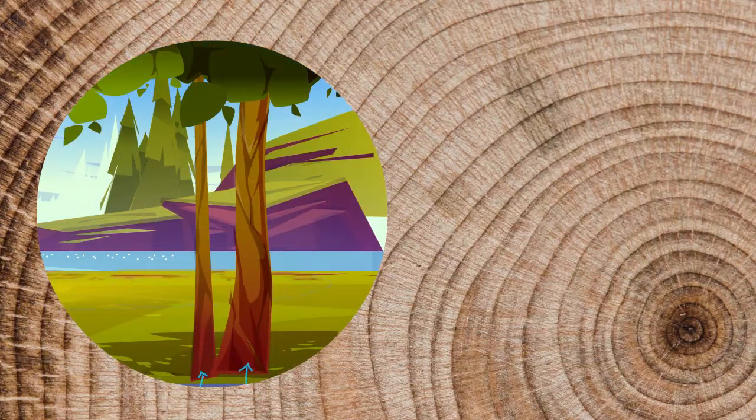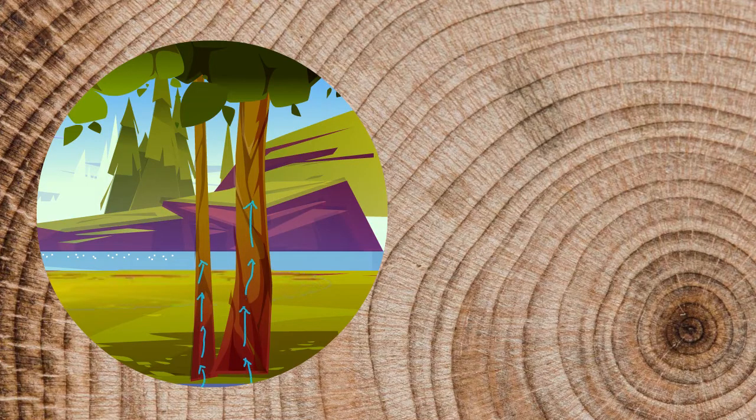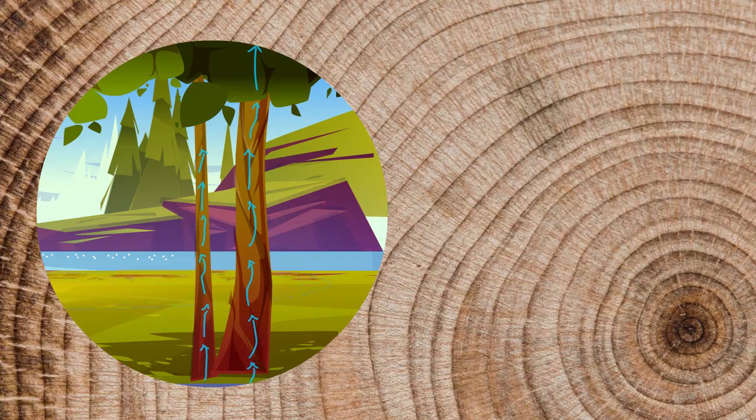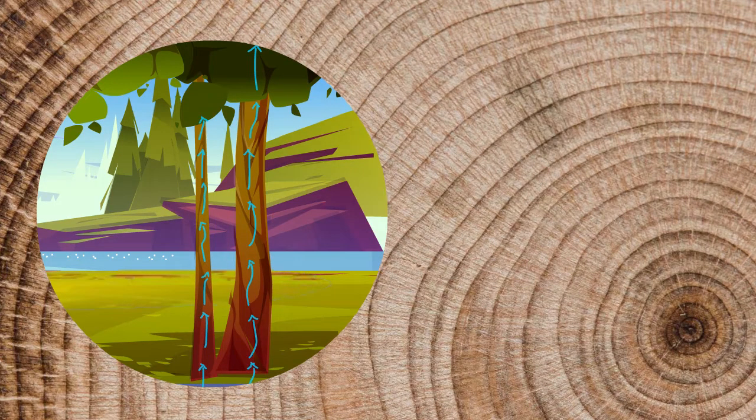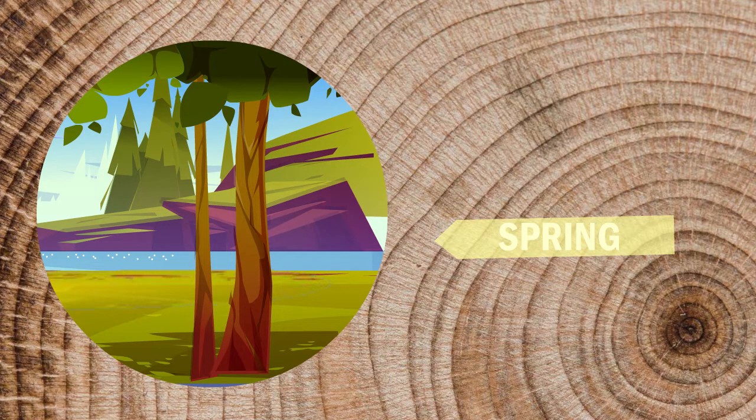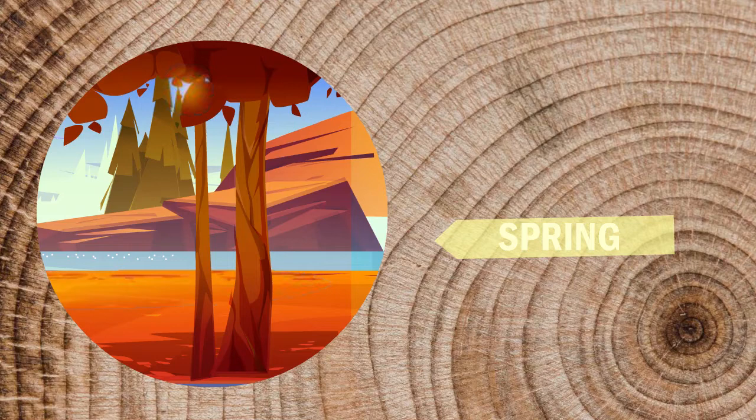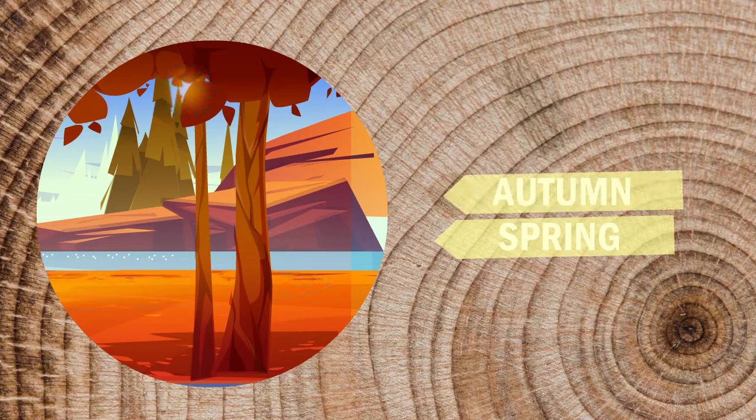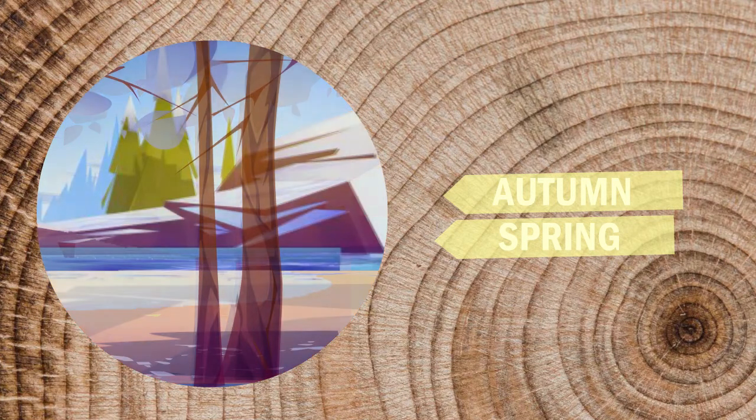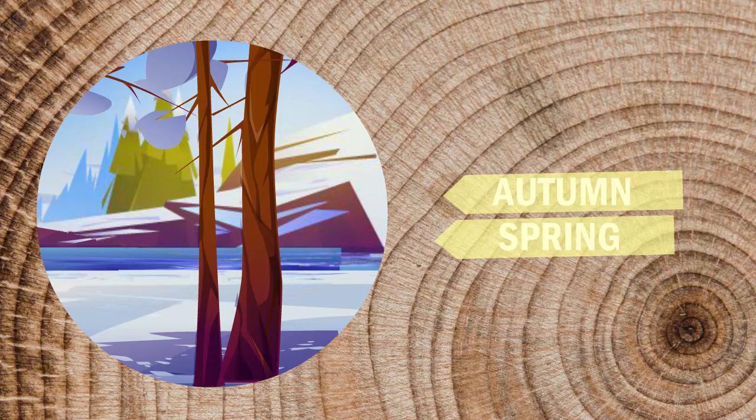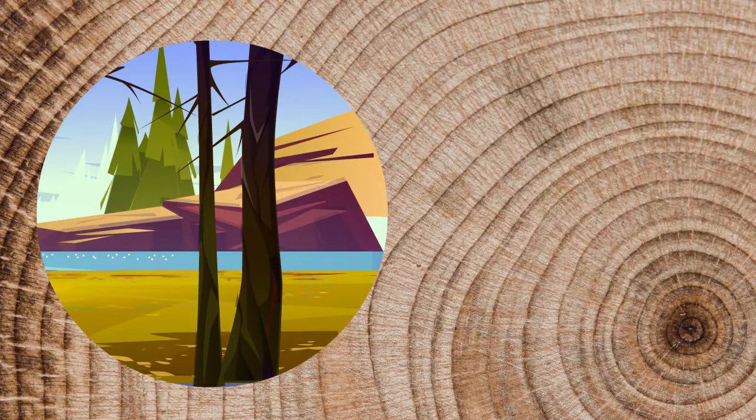In springtime, trees grow by forming new wood composed of large cells capable of transporting all the water and nutrients that trees need to support the new leaves. This wood makes up the light-colored part of the ring. In late summer, the growth slows down, the wood cells become smaller and the walls thicker, making the darker portion of the ring. In winter, trees go into hibernation and no longer produce new cells until the following spring.